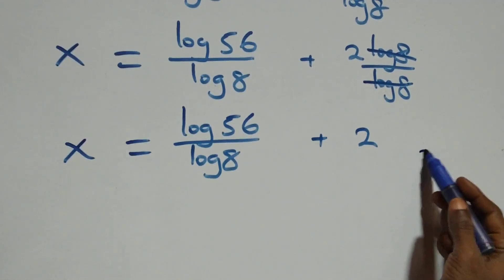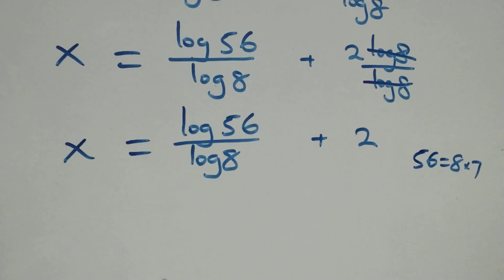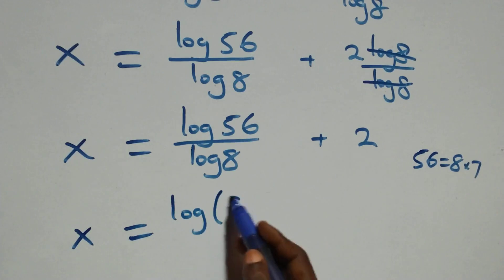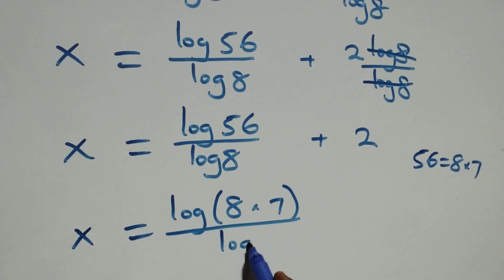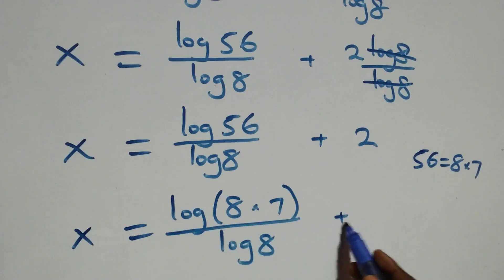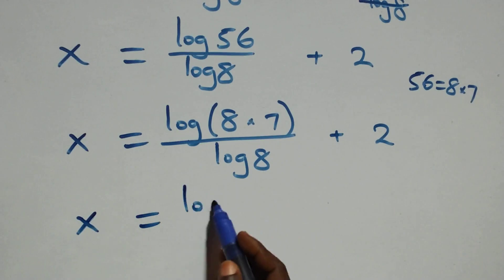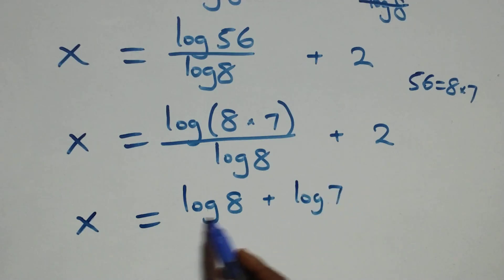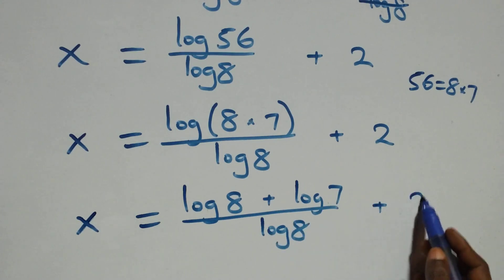Next step, we can write 56 as 8 times 7. So what we have becomes x equals log(8 times 7) over log 8 plus 2. This also follows the log product rule, so it becomes x equals log 8 plus log 7, all over log 8, plus 2.